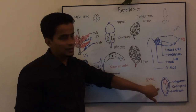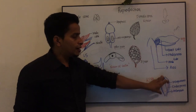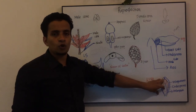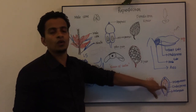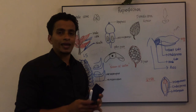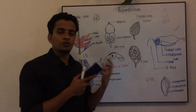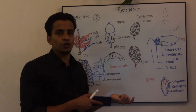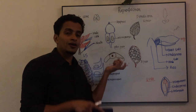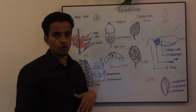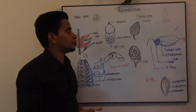Looking at the ovule structure, it has an integument. Inside, you can see the female prothallus, or haploid endosperm, where archegonia and the female gamete — the egg — are located. This is the condition before pollination. After pollination, the male gamete undergoes further development. We will discuss this in the next class.